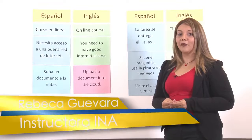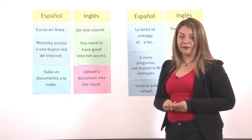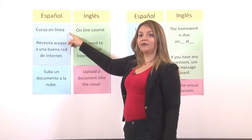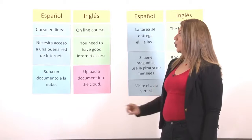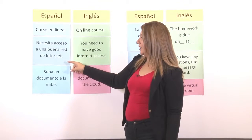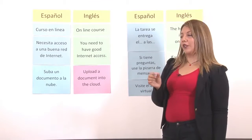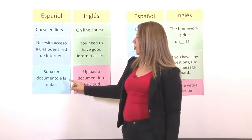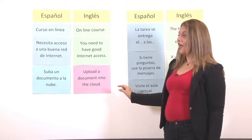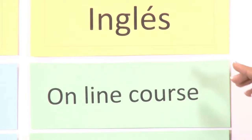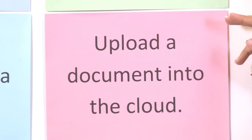Bienvenidos a una cápsula del INA Virtual, donde hoy vamos a aprender frases útiles para e-learning o aprendizaje virtual. Nuestra primera frase es 'curso en línea', que en inglés se dice 'online course'. Una segunda frase es 'usted necesita acceso a una buena red de internet', que en inglés se dice 'you need to have good internet access'. Y para subir documentos a la red: 'suba un documento a la nube', que en inglés es 'upload a document into the cloud'. Vamos a repetir las frases en inglés: online course, you need to have good internet access, and upload a document into the cloud.